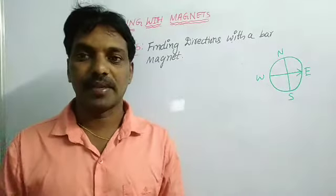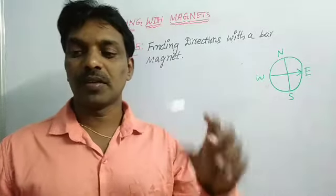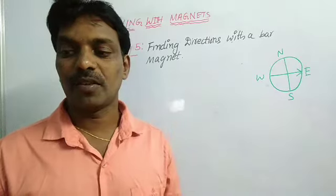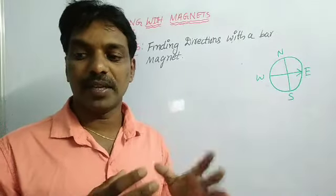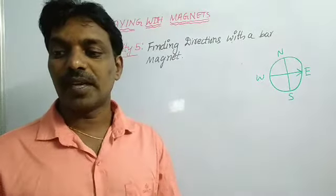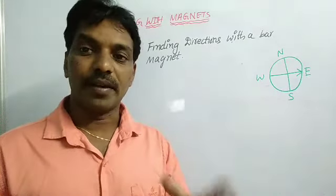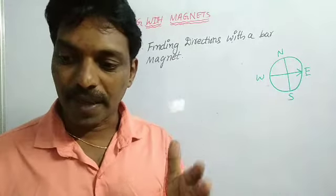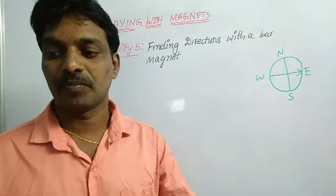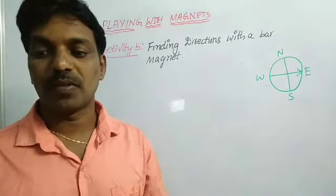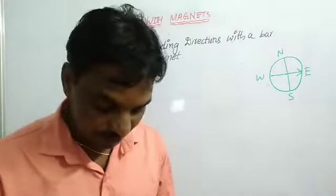Let me read from the textbook. What we want to do: suspend the bar magnet freely with the help of a thread tied around its center as shown in figure 4. Does the magnet remain stationary? Wait for some time. What do you find?